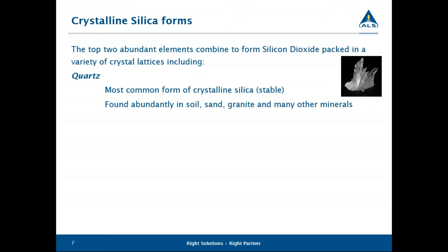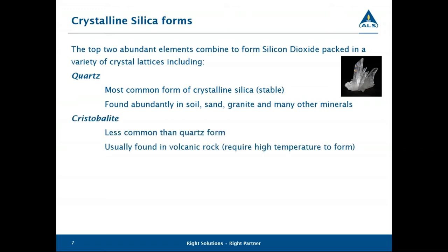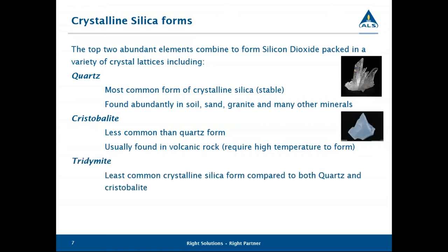About 98% of the time when you're doing your monitoring, quartz is going to be the primary polymorph of interest. Cristobalite is the second most abundant, typically favoring high temperature and pressure conditions — found in some volcanic rock and in foundry applications. The least common of the three is tridymite. There are a few mines in the world that produce this, but we rarely see it from an industrial standpoint.